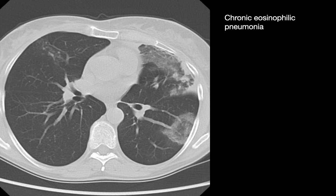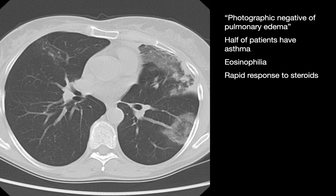Chronic eosinophilic pneumonia is an uncommon inflammatory non-infectious lung condition where lung parenchyma is infiltrated by predominantly eosinophils. A multifocal bilateral peripheral pattern of heterogeneous lung opacities is a classic presentation of CEP, which some radiologists have described as the 'photographic negative' of pulmonary edema. Half of patients with CEP have asthma and increased eosinophils are often present in their peripheral blood. Symptoms can include shortness of breath, fever, cough, weight loss, and malaise, but this disorder can respond relatively rapidly to steroid therapy.